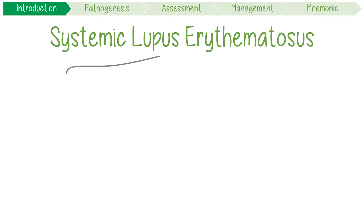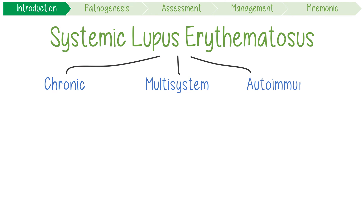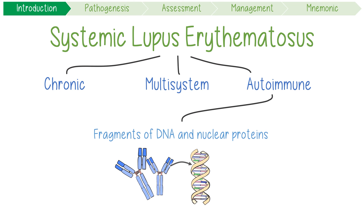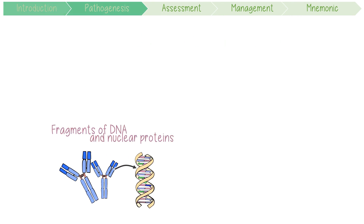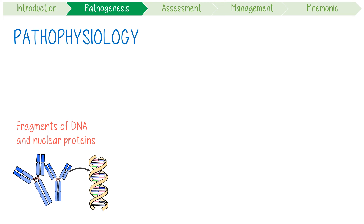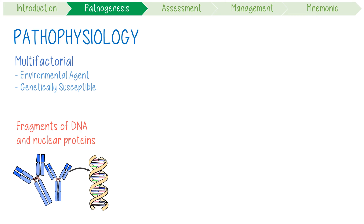Systemic lupus erythematosus is a chronic, multi-system autoimmune disease. It affects so many organs because it's driven by an immune response to fragments of DNA and proteins from the cell's nucleus, which are found ubiquitously all over the body. Its pathogenesis is likely multifactorial, involving a trigger from an environmental agent in a genetically susceptible host.